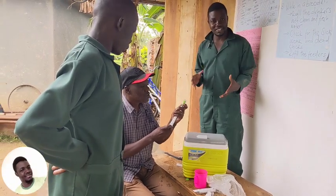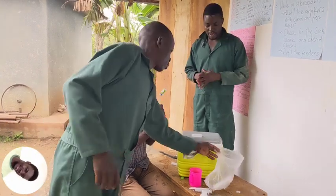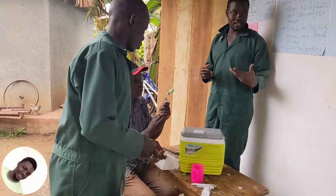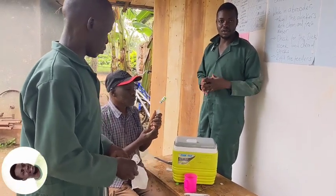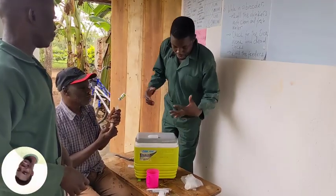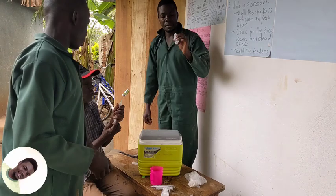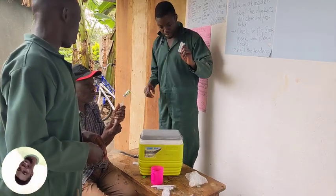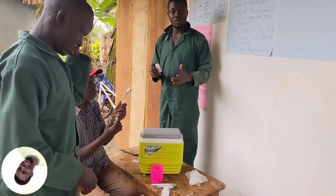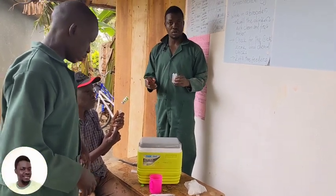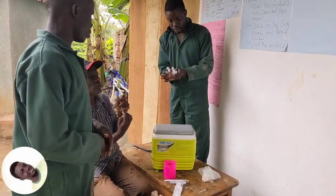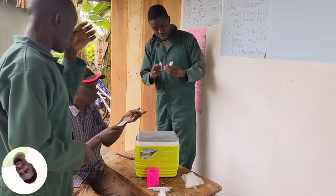Today we are going to vaccinate our chicks. Here we are mixing the vaccine — this is the NCD and the IB: Newcastle disease and infectious bronchitis. We are mixing our vaccine, and these are 10 ml per each strip, mixing into a 1,000 dosage bottle.